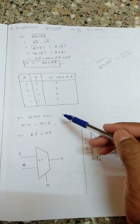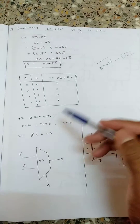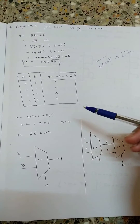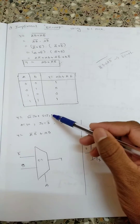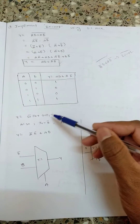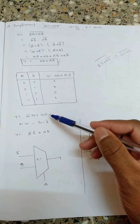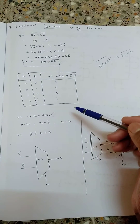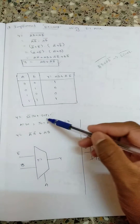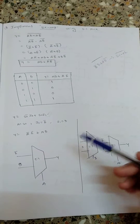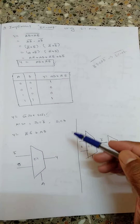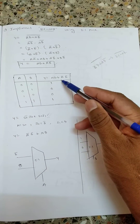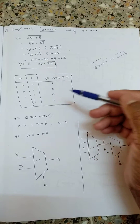To implement any gate using a 2x1 MUX, first write the output equation of the 2x1 MUX. The output equation is: Y = S_0_bar·I_0 + S_0·I_1. I need to convert this into the XNOR equation form.